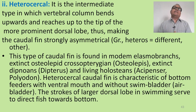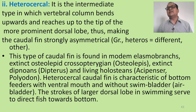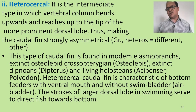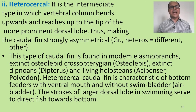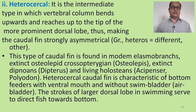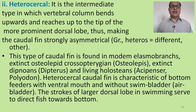Heterocercal tail: it is the intermediate type in which the vertebral column bends upward and reaches the tip of the more prominent dorsal lobe, thus making the caudal fin strongly asymmetrical. Hetero means different — both lobes, epicaudal and hypocaudal, are not similar in shape and size. This type of caudal fin is found in modern Elasmobranchii and Chondrichthyes fish — dogfish, sharks, and rays — and extinct Osteolepis, Crossopterygii, extinct Dipnoan Dipterus, and living Holostean Isipensir and Polyodon. The heterocercal caudal fin is the characteristic feature of bottom feeders with a ventral mouth and without a swim bladder or air bladder. The stroke of the larger caudal dorsal lobe in swimming serves to direct the fish towards the bottom.